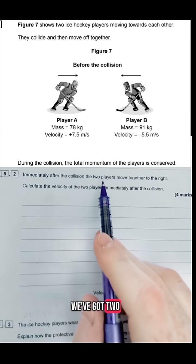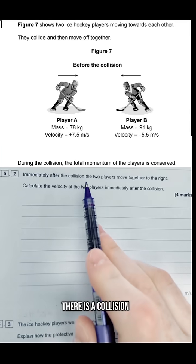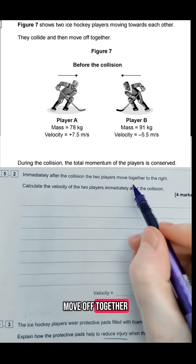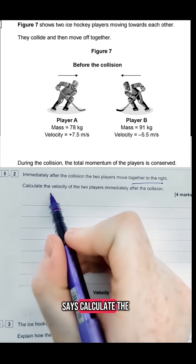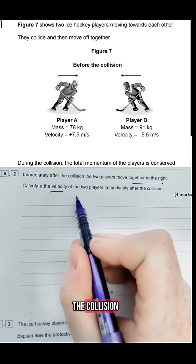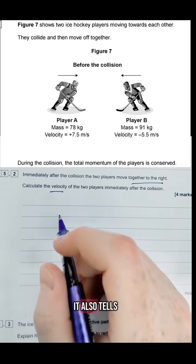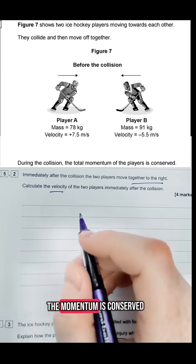In this question we've got two hockey players and it says there is a collision and after the collision the two players move off together to the right. So let's calculate the velocity of the two players after the collision. Early in the question it also tells us to make sure we know that momentum is conserved.